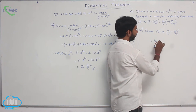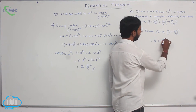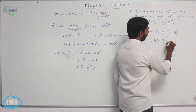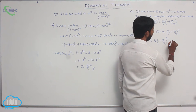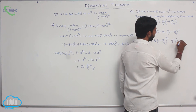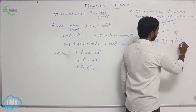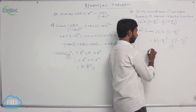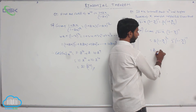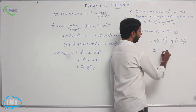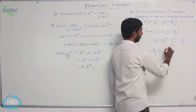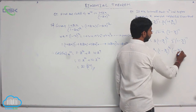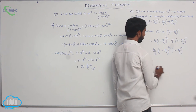In the first term, 4 is taken as common: square root of 4 gives 2, so we get 2 into 1 minus x by 4 whole power 1 by 2. In the second term, 3 is taken as common, giving 3 power minus 1 into 1 minus x by 6 whole power minus 1. This gives us 2 by 3 of 1 minus x by 4 whole power 1 by 2 into 1 minus x by 6 whole power minus 1.